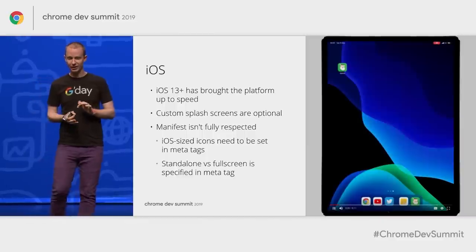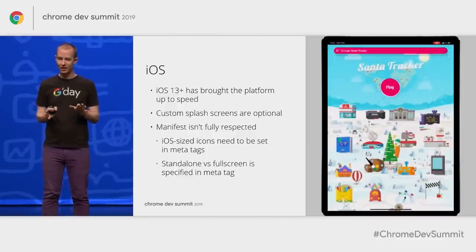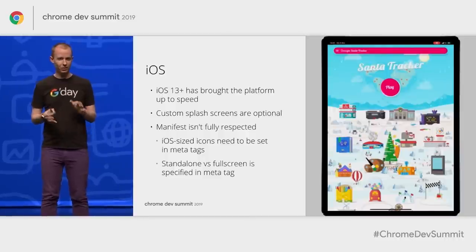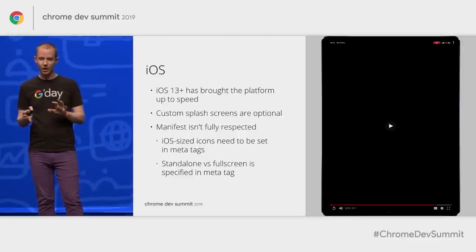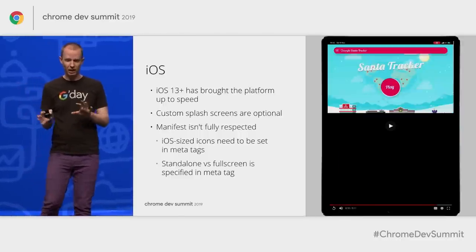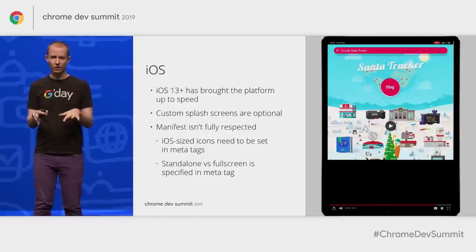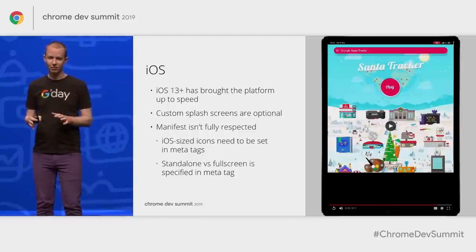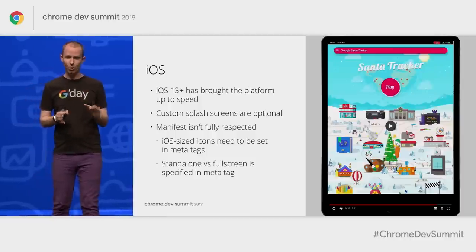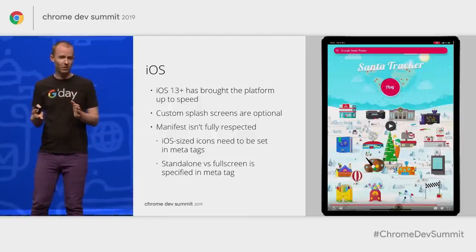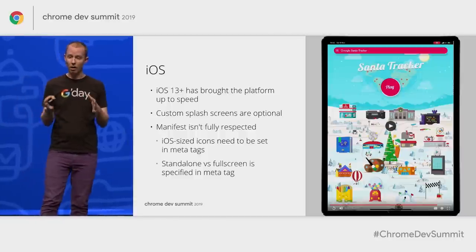Finally, and probably most interestingly, let's talk about the how on iOS. iOS has had installable web apps since the beginning, but the last few releases have made install on iOS quite practical. Here's an example of loading Santa Tracker from the iPad. We do have to have custom icons, done via iOS icon tags — tooling can help you generate these. Apple previously suggested providing splash screens, but we don't think this is that important anymore, as iOS 13 brought nice animations and fades.